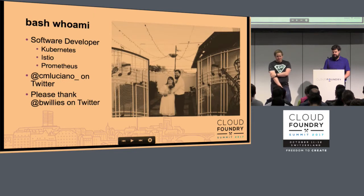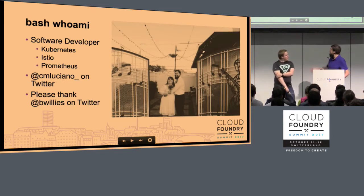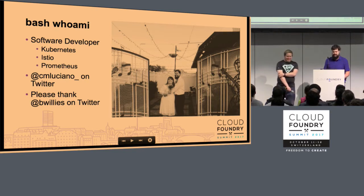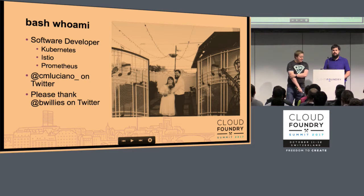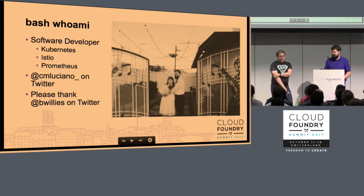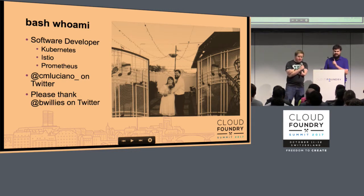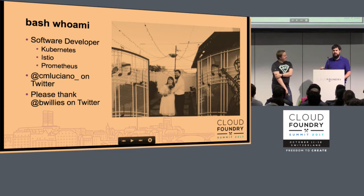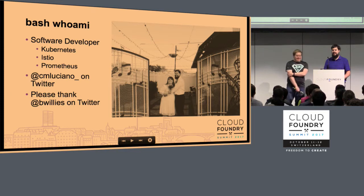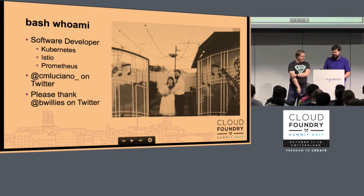We'll take questions. So this is me. I just got married a few weeks ago in Vegas. If you could please tweet at my wife on Twitter and thank her for allowing me to come here, that'd be great. That's at bwillies. I work full time on Kubernetes mostly, though I also balance my time with Istio and other cloud native foundation projects. Don't forget the underscore on there. CM Luciano, without the underscore, is a Canadian resident that owns a junk removal company — a lot more successful than I am. So remember the underscore.